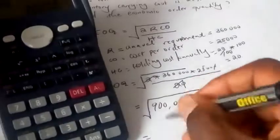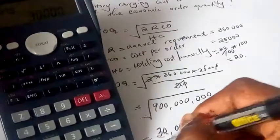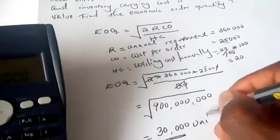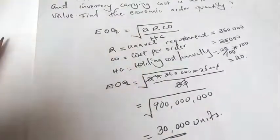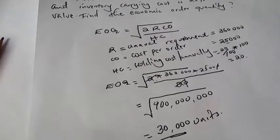Which will give me 30,000 units. So my economic order quantity is 30,000 units. Thank you for watching this particular clip. Subscribe and comment for more videos. Thank you.